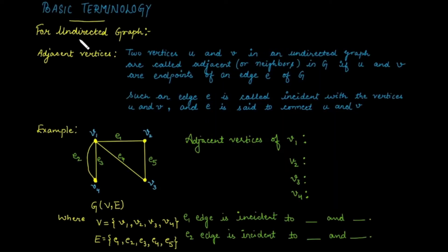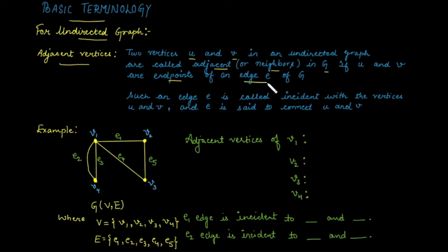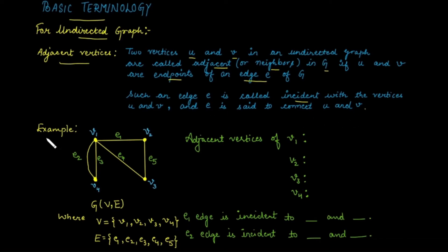Basic terminology related to the undirected graph: the first case is adjacent vertices. Two vertices u and v in an undirected graph are called adjacent or neighbors in a graph G if u and v are the endpoints of an edge e. In that case, such an edge is called incident with vertex u and v, or we can say that e is connected to u and v.